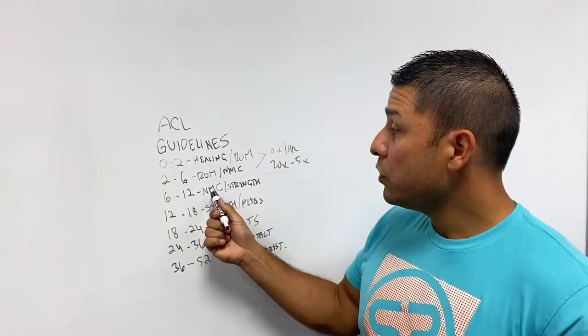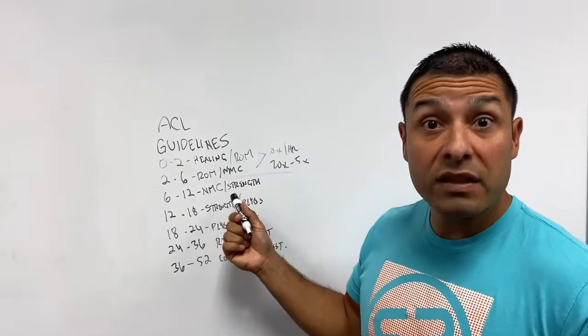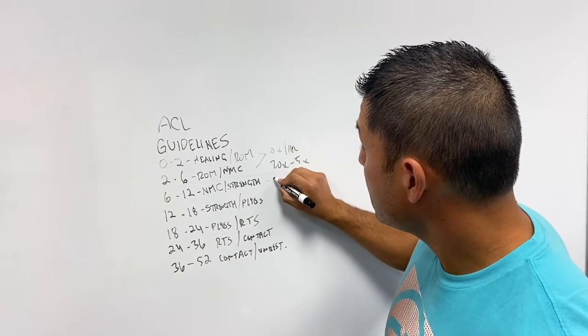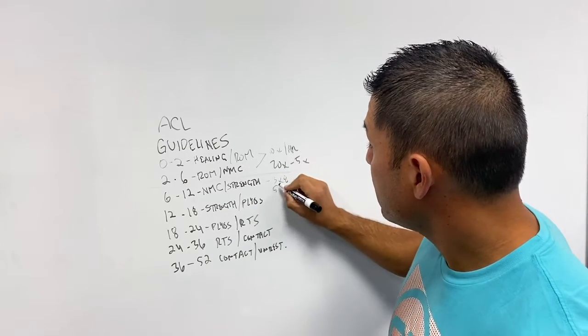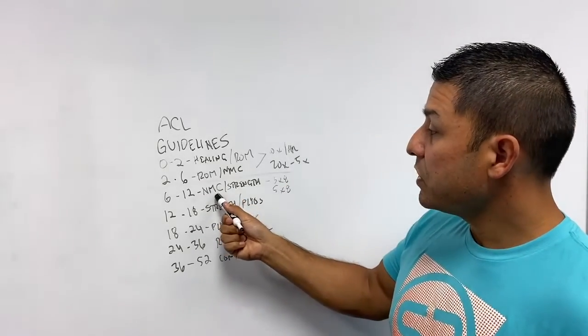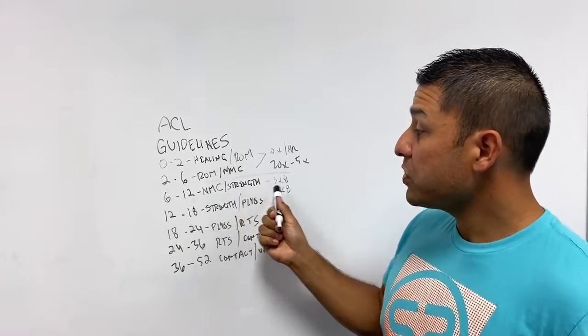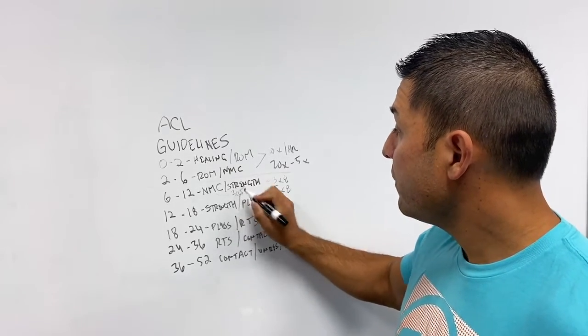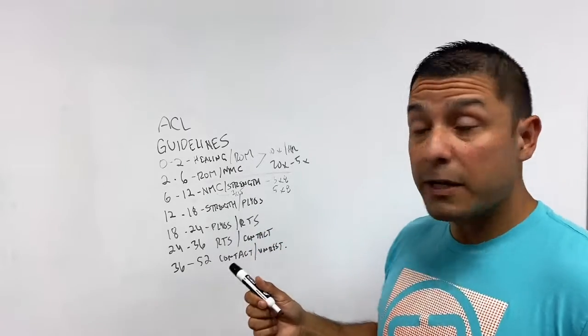As you go into neuromuscular control and working on strength, this is where you can play with your strength principles. So here we can be talking about three sets of eight, five sets of eight. And if you're going to start looking at neuromuscular control, you can do in the 15s, but you're talking about strength, that's where you can actually change it. If you're working on neuromuscular control, three by 15, start changing up rep schemes when you're working on the strength cycle.